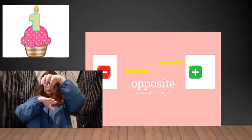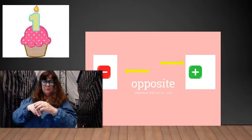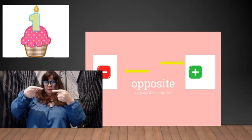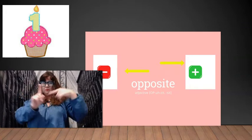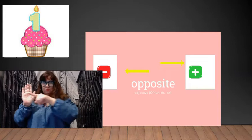Up there, one-year-old cake. Over there, opposite, opposite. Negative, positive, minus, plus.